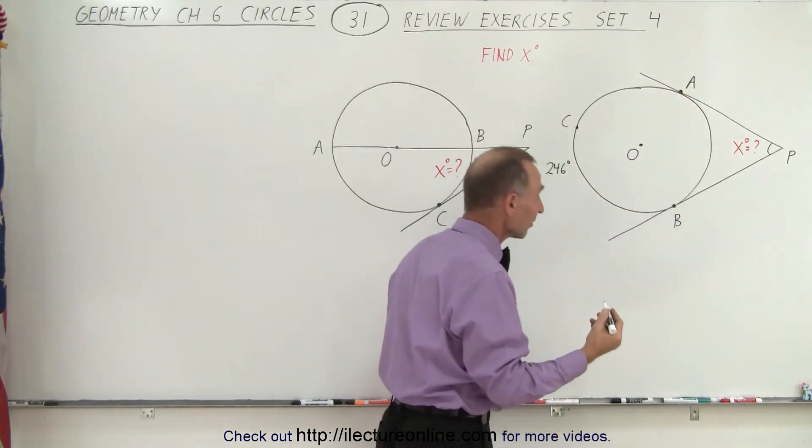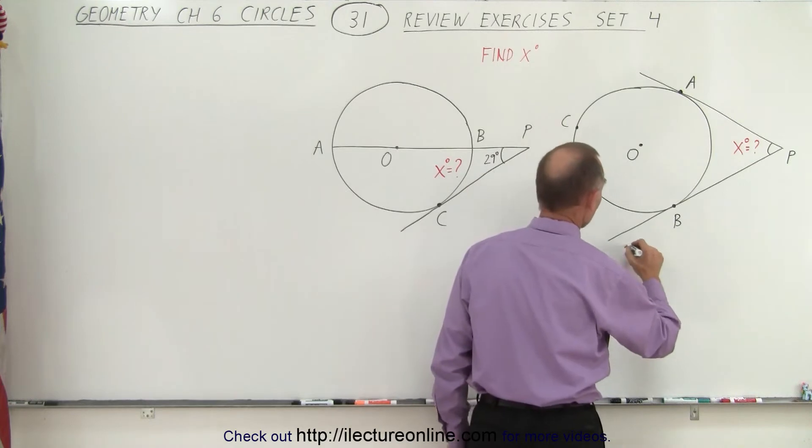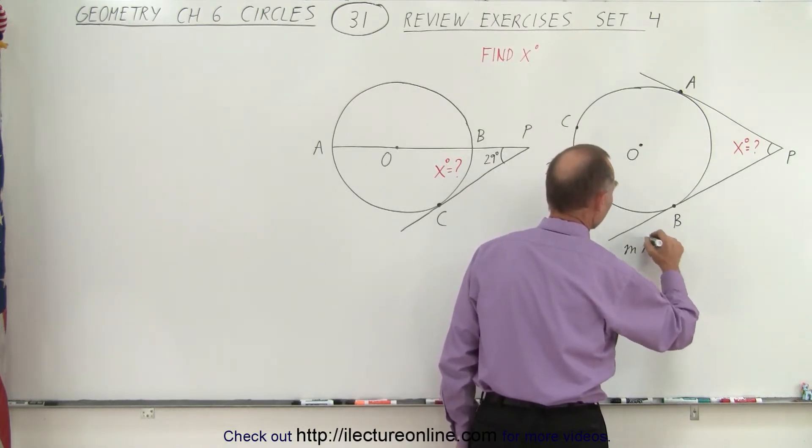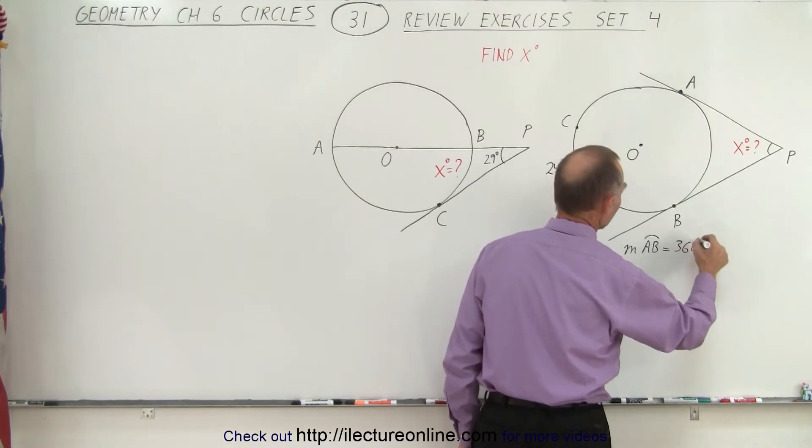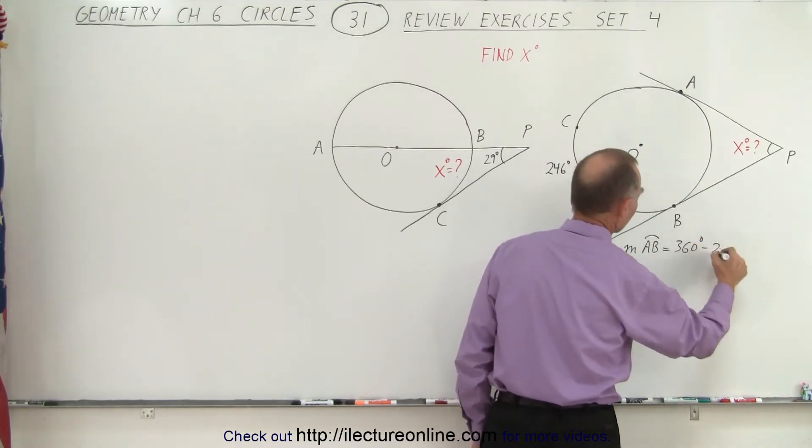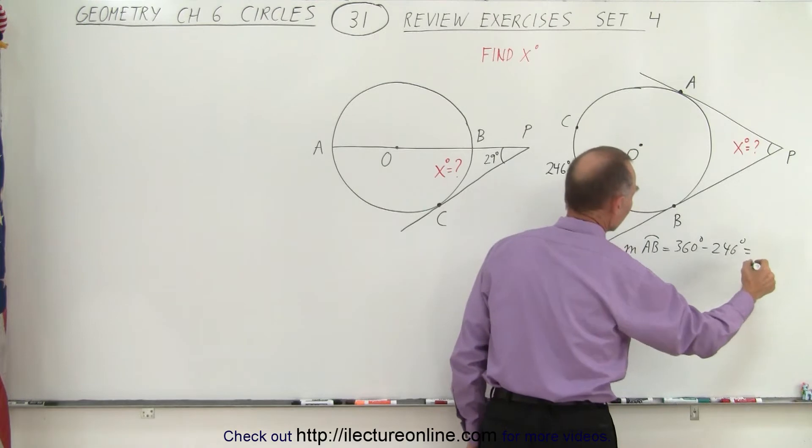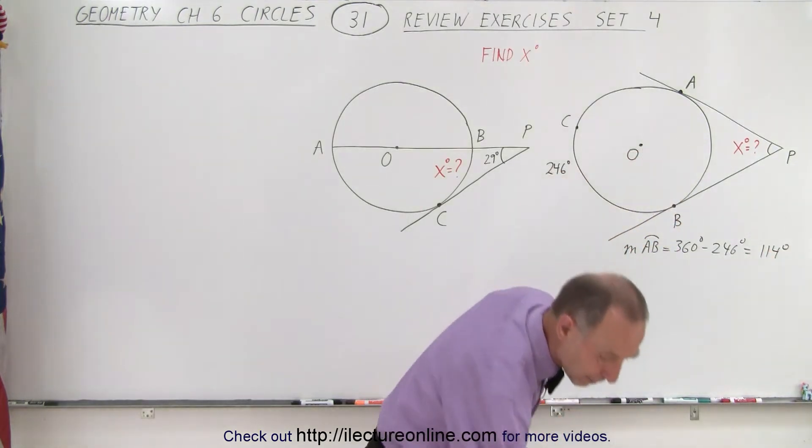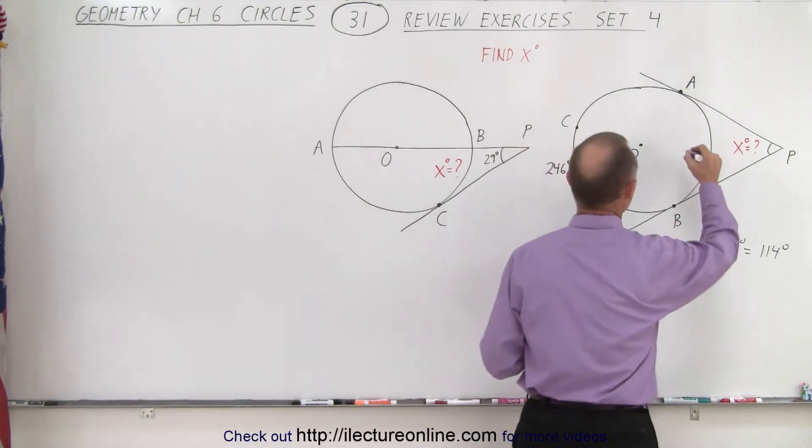So how do we find the value for the inside? Well we know that the measure for the arc length from A to B on the inside is equal to 360 degrees minus the 246 degrees which is equal to 114 degrees. So we can right away plug that value in here, that makes it a little bit easier.